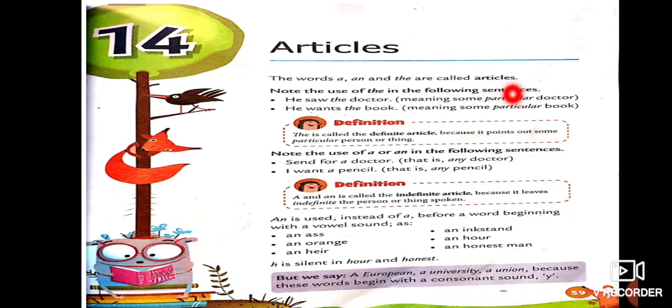Students, three words. Which three words? A, an, the. This one is a, this one is read as an. A and an, and th, e, the. These are called articles. Now, where and how you have to use these articles? Let's see.